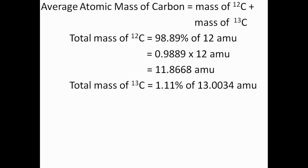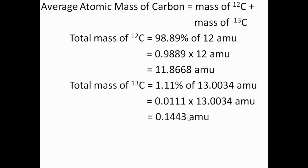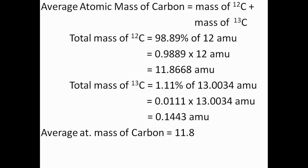Similarly, the total mass contribution of C13 equals 1.11% of 13.0034 AMU, which gives 0.1443 AMU. The average atomic mass of carbon is the sum of these two values: 11.8668 + 0.1443 = 12.01 AMU, which matches the value shown in the periodic table.